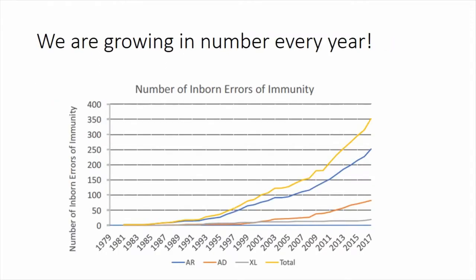This graph represents the growth in the different types of primary immune deficiencies going back to 1979 when primary immune deficiencies were first recognized. There has been a doubling in the last 10 years. Some of this research has been fueled by you. If you did a walk and raised money, your research has funded our understanding of all of these different primary immune deficiencies. You can take credit for some of the knowledge on this slide.